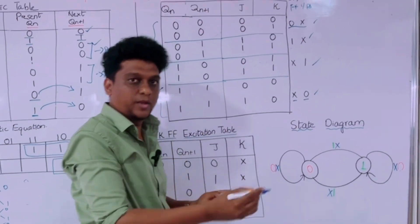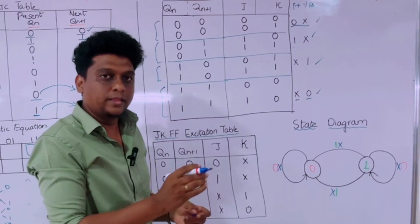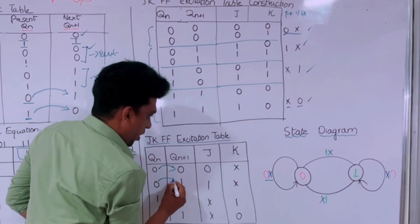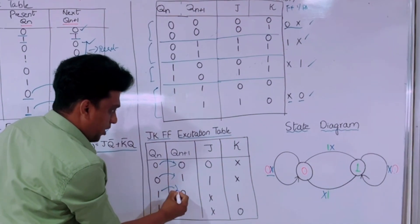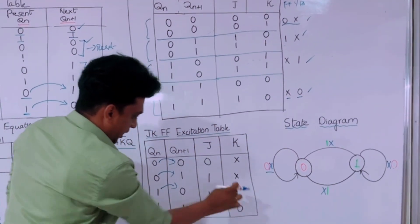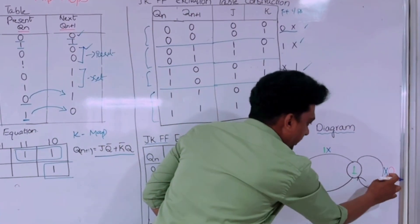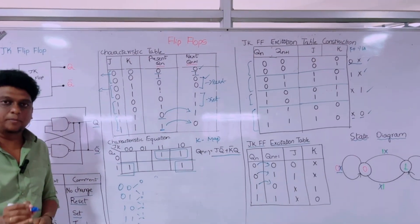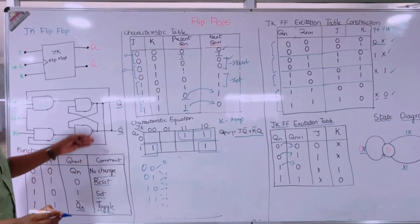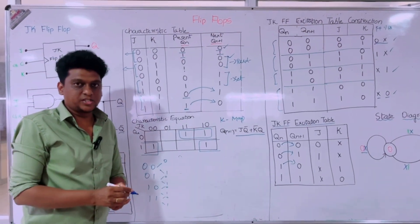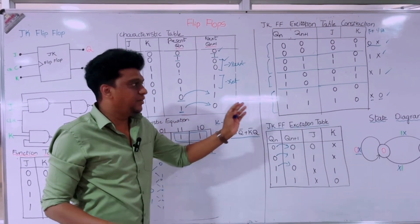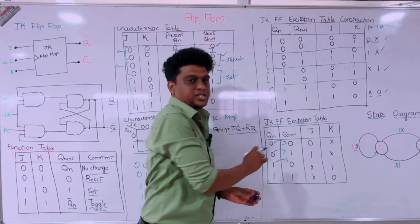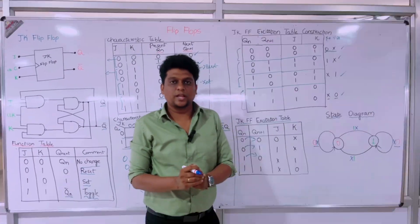The state diagram shows where the present state transitions to the next state for the corresponding input. For state 0 to state 0 the input is 0X. For state 0 to state 1 the input is 1X. For state 1 to state 0 the input is X1. For state 1 to state 1 the input is X0. For the JK flip-flop, the key highlight is it performs three operations. From the function table we build the characteristics table, then perform K-map simplification, define flip-flop inputs for the excitation table, and finally draw the state diagram. Thank you for watching.